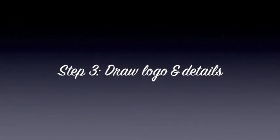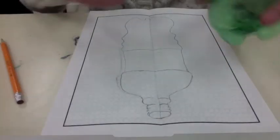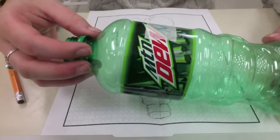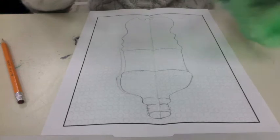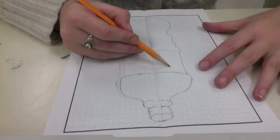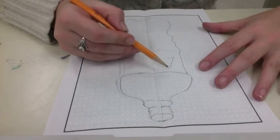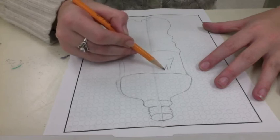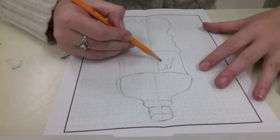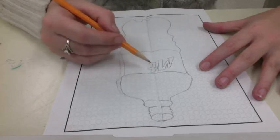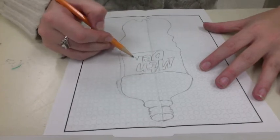Step three is drawing the logo. So I have a logo on mine—it says Mountain Dew. If your tape is covering your logo you can move it over. And I'm going to draw the Mountain Dew logo. You also would want to include any details like if it has the calories or nutrition facts or other writing on your bottle.